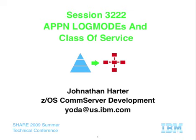Once VTAM decided to play in the APPN game, we had to play by the rules already set in place, and some of those were the log mode and class of service rules. At the same time, VTAM has always done subarea log mode and class of service the way it's always been done in the subarea realm. So when we stuck these two together at the interchange node, that node had to abide by the APPN rules on the APPN side and the subarea rules on the subarea side. It's the gluing of those two architectures together that basically introduced a lot of these problems. When your head starts spinning as you see this presentation, just remember it's because the architectures were done at different times by different groups without really talking to each other.